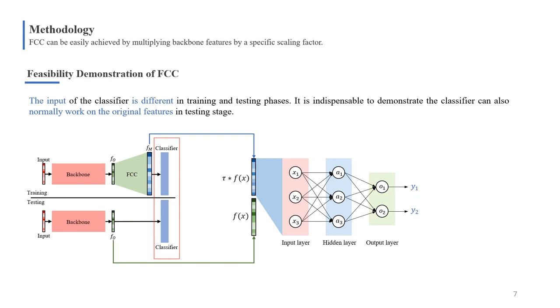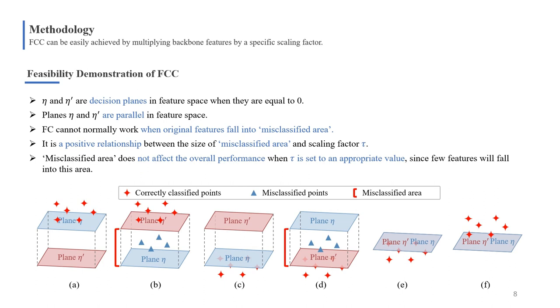We can get y1 and y2 when the input is multiplied features. We can get y1' and y2' when the original features are fed. Next, we make y1 minus y2 equal to η. If the classifier can normally work, it needs to satisfy η' is greater than zero when η is greater than zero.